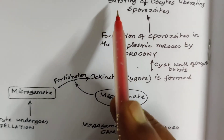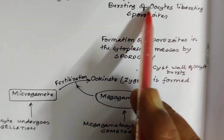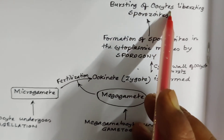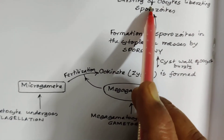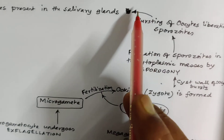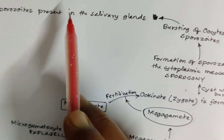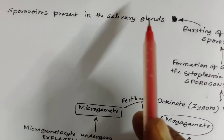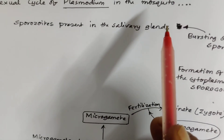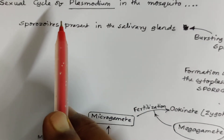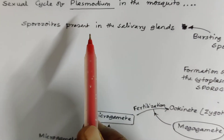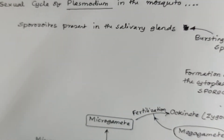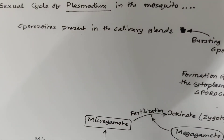These sporozoites are liberated upon bursting of the oocysts. Thereafter, these sporozoites are present in the salivary glands. When these mosquitoes bite an individual, these sporozoites are released into the body of the human beings.